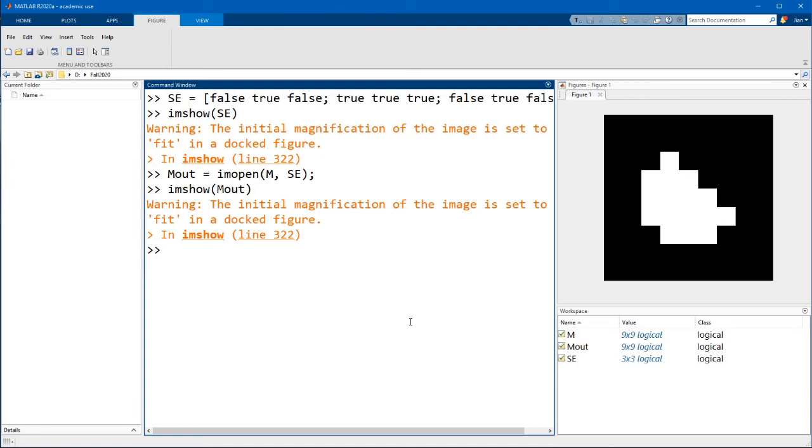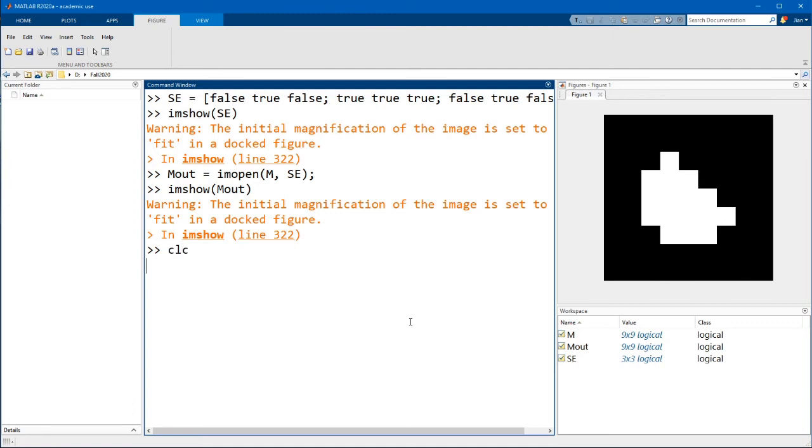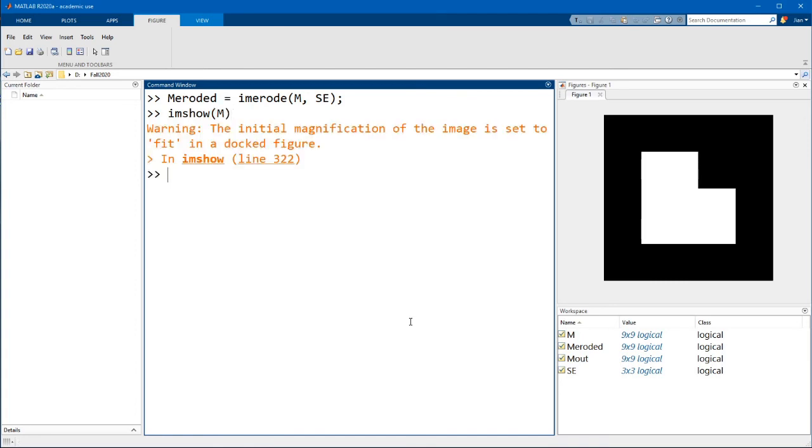Now as I mentioned opening is simply erosion followed by dilation. And to prove this I'm going to carry out the two different steps. So let's use imerode. And so if we look at our original mask again, this is what the eroded mask looks like.